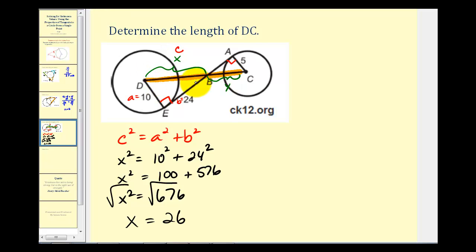So the length of DB is equal to twenty-six units. Let's write that down. But we still have to determine the length of BC, which we labeled Y. Again, looking back at these triangles, notice angle DBE, this angle here, and angle CBA would be congruent because they're vertical angles.